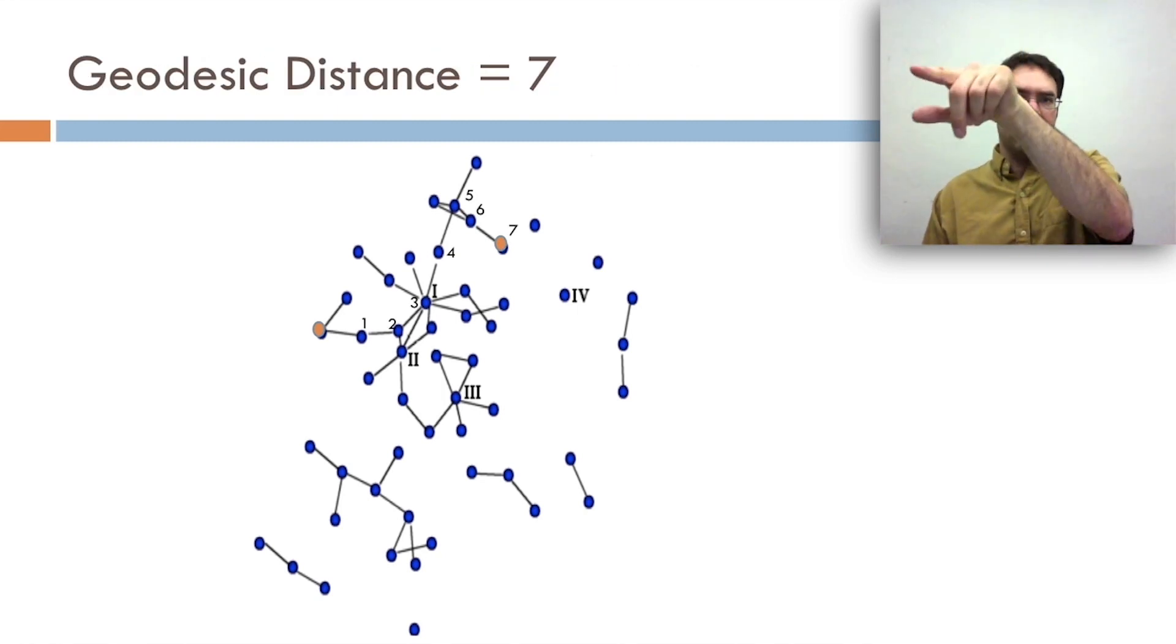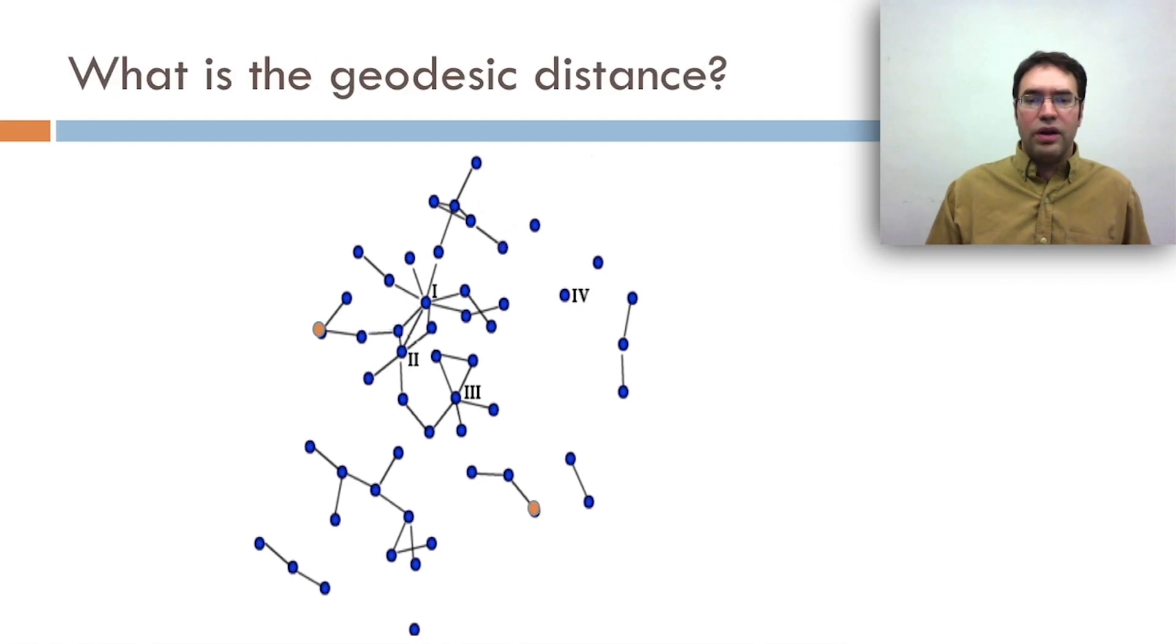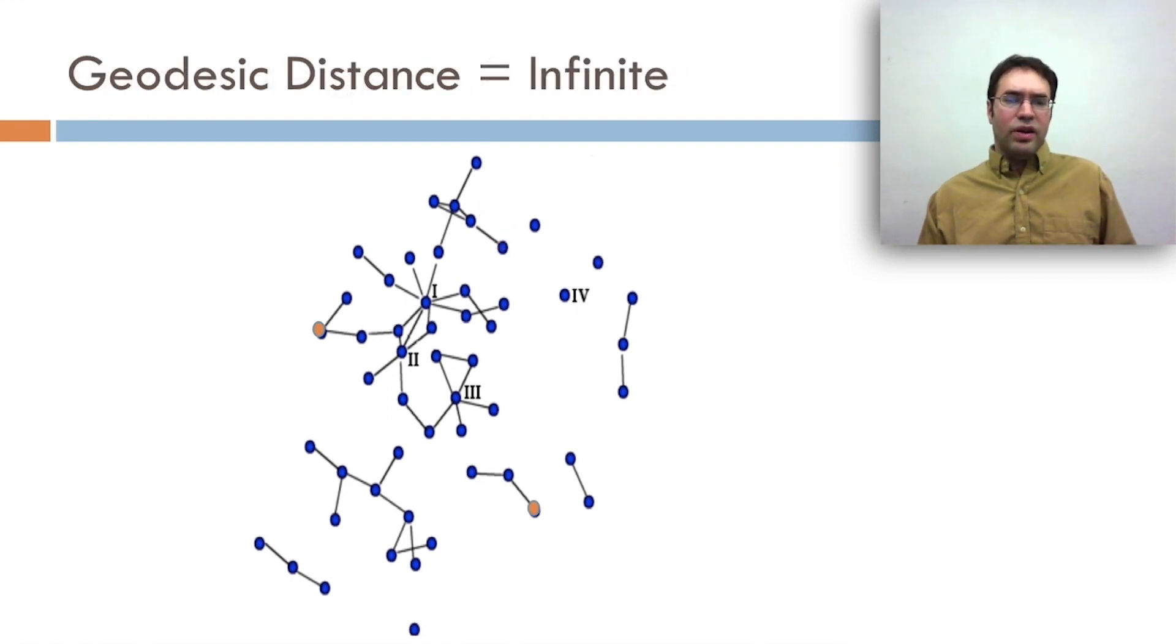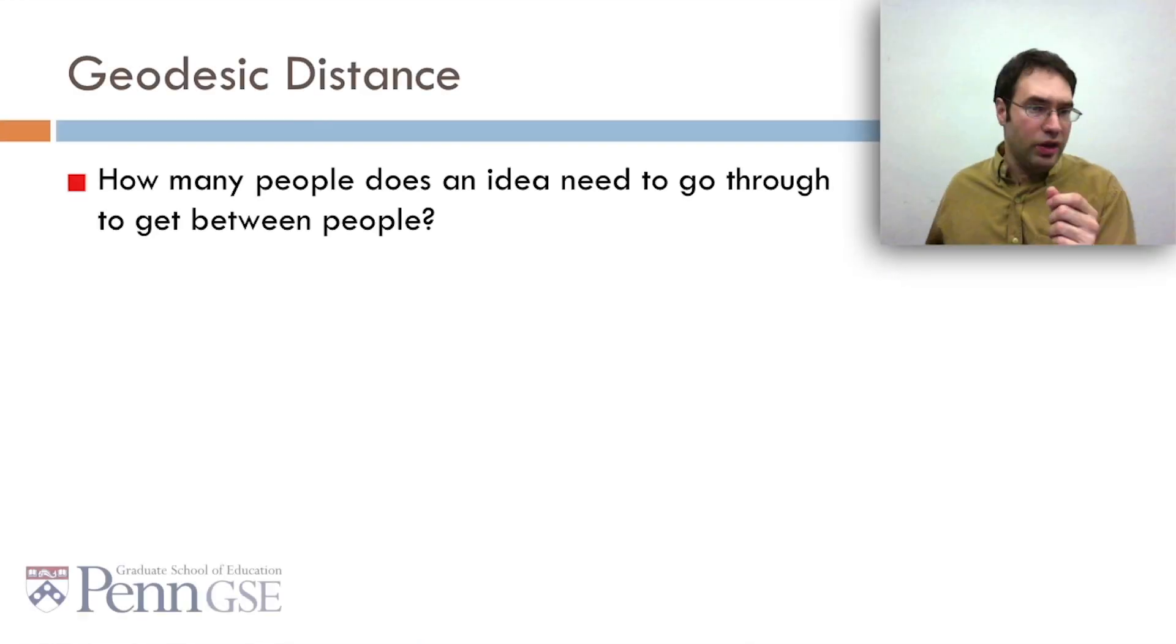The answer is seven. One, two, three, four, five, six, seven links. How about these two? Well, in this case, there's no way between them, so it's actually infinite. One way you might use geodesic distance is to say, how many people does an idea need to go through to get between people?